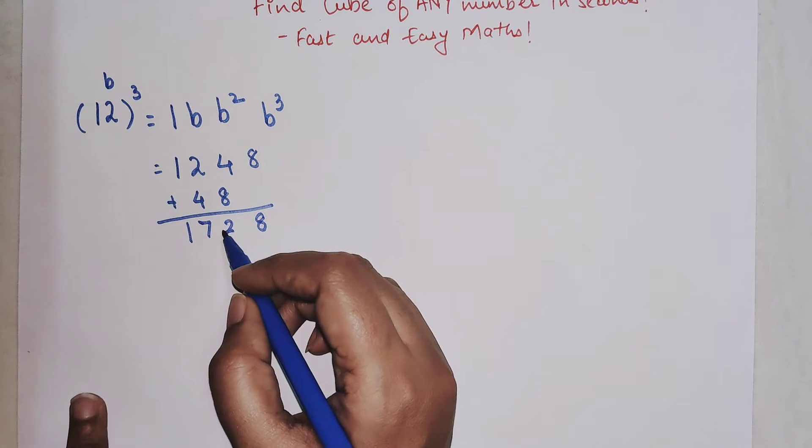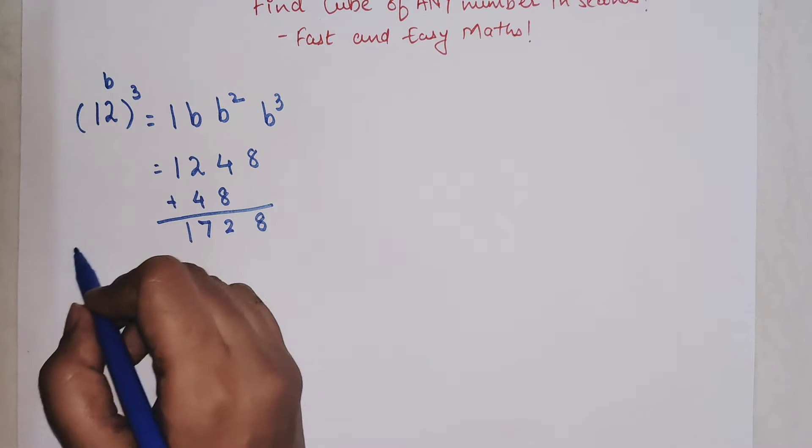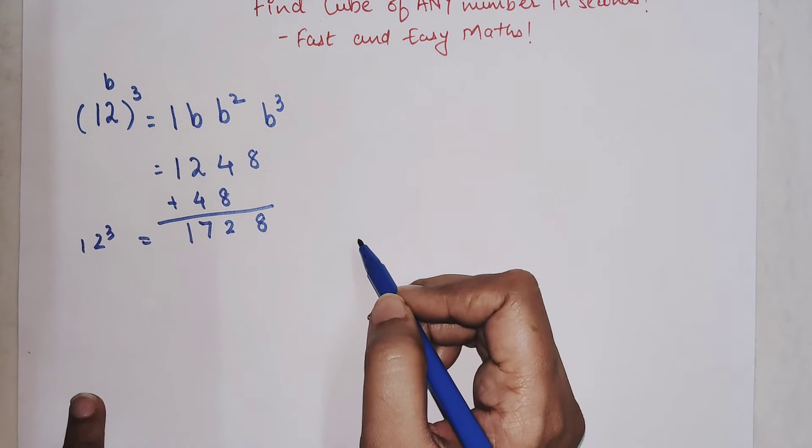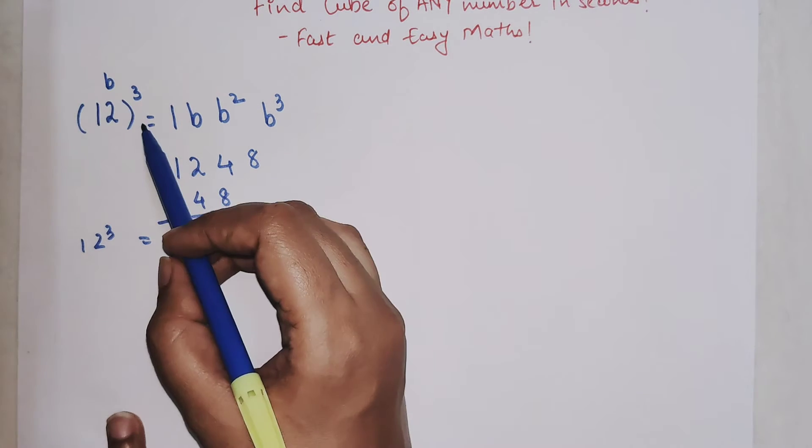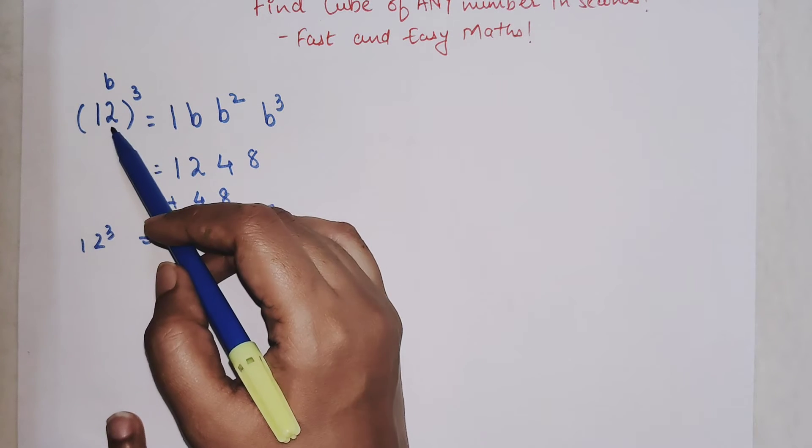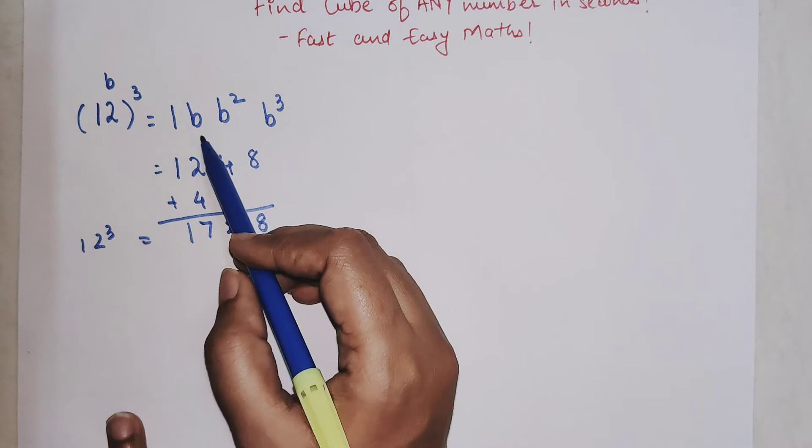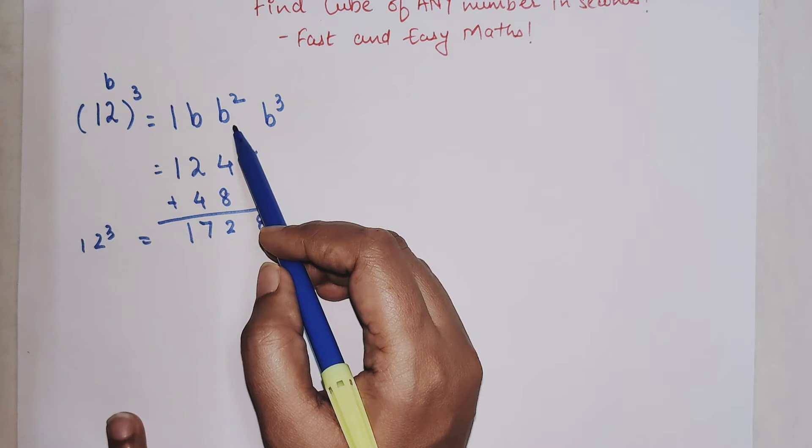Basically your answer for twelve cube is nothing but 1728. So you just have to remember that you keep the one as it is and the rest number, the units digit number, will be taken as it is the first time, then we do the square and then we do the cube.